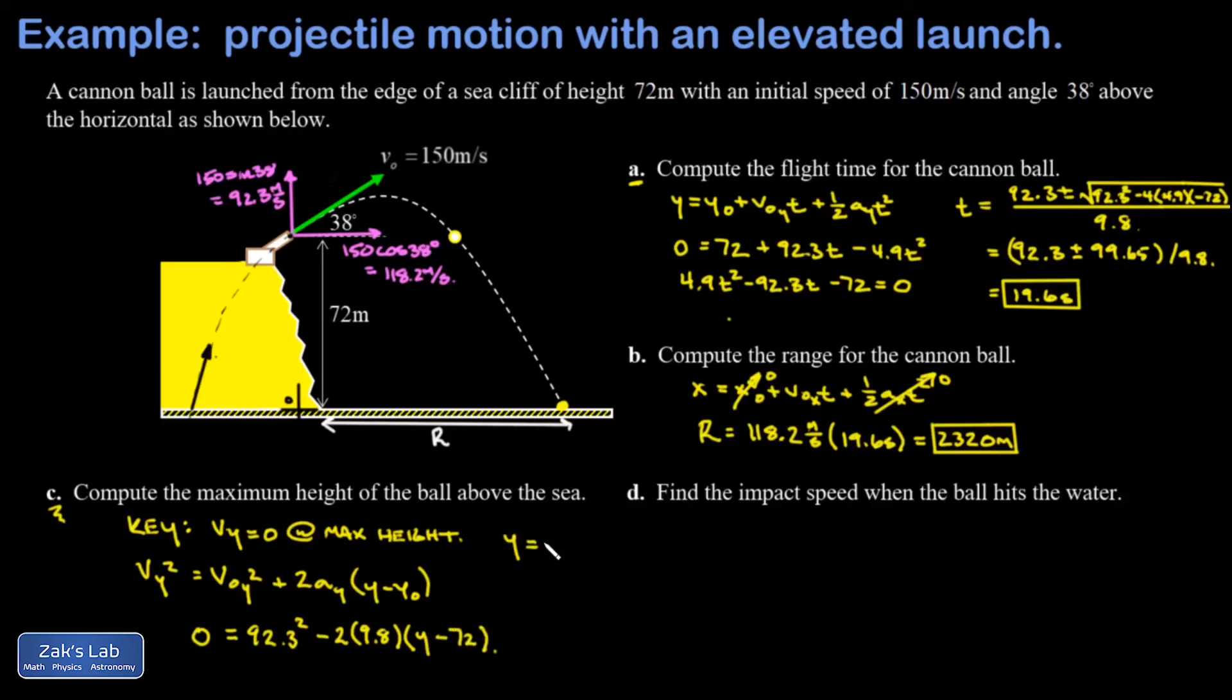When I crunch the numbers on this to solve for y, I get a maximum height of 507 meters. Note that it's perfectly fine if you want to plug vy = 0 into the kinematics equation v = v₀ + at, then solve for the time of the maximum height and plug it into the equation of motion for the y coordinate. You'll find the same value of 507 meters.